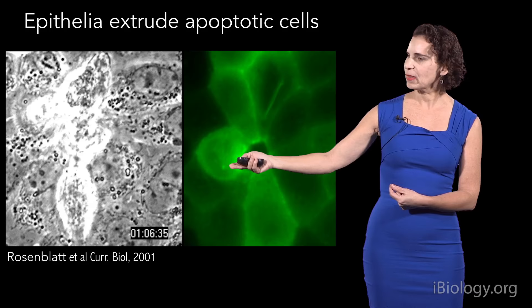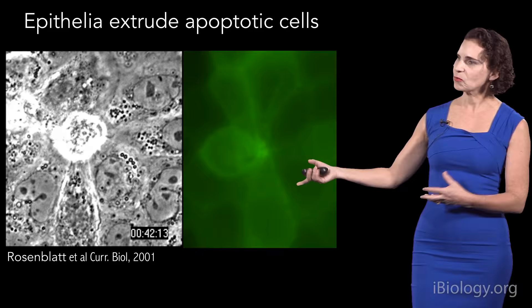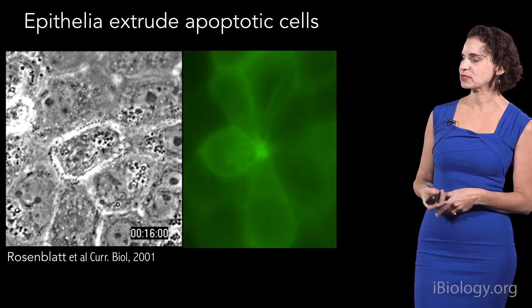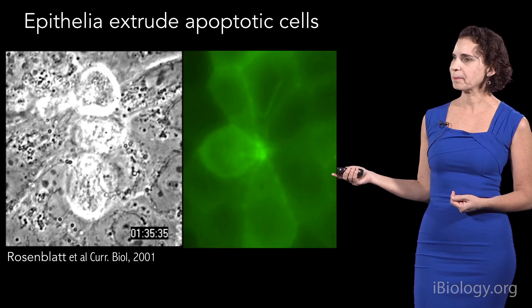To do so, these cells signal to their live neighbors surrounding them to activate formation and contraction of an actinomyosin contractile ring, which will squeeze around and below to just heft them out into the luminal space. By doing this, they're able to maintain this constant barrier.